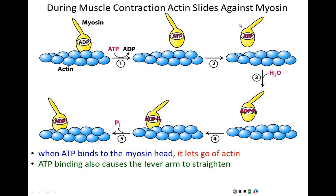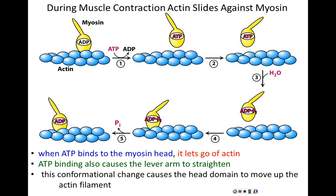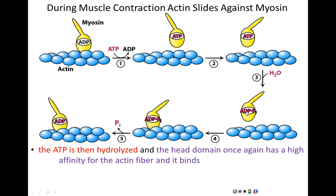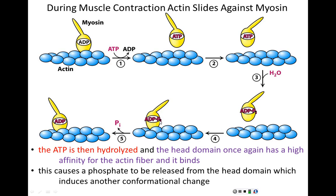Then the ATP is hydrolyzed to ADP. The phosphate that was cut off — going from ATP to ADP — is still in the myosin head but has been separated. So the myosin is now bound to ADP and a free phosphate. Once that ATP has been hydrolyzed and the myosin is bound to ADP, the affinity for actin has gone up, so the myosin head rebinds to actin. Lastly, when that free phosphate is released, it causes the lever arm to shift backwards, moving actin relative to myosin. This is the power stroke of myosin, and it relies not on ATP cleavage but on phosphate release.